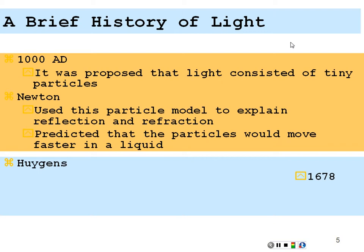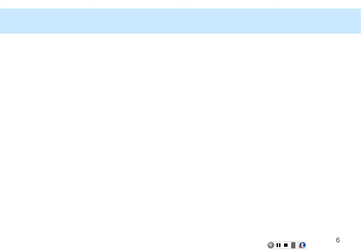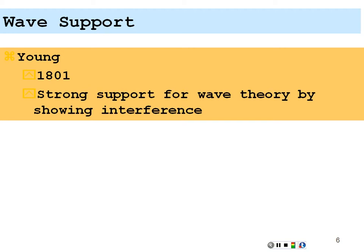Huygens, in 1678, assumed a wave model of light and was able to explain many of its properties using this wave-like nature. Then in 1801 there was strong support for the wave theory by showing that light exhibited interference — very important, because that's something you would not see with particles. Particles couldn't interfere in the way he was showing constructive and destructive interference.